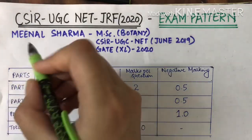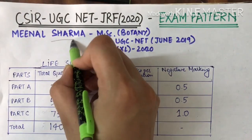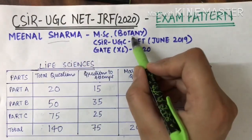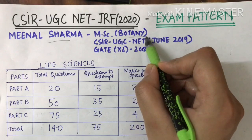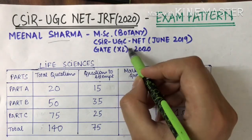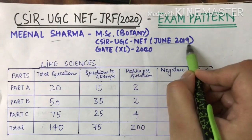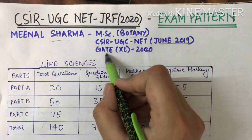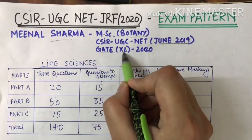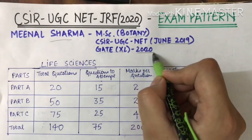Hello friends, my name is Meenal Sharma. I have done my Masters in Botany. I have also qualified CSIR UGC NET June 2019 and GATE in Life Sciences in 2020.